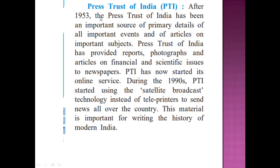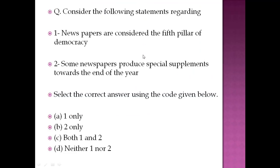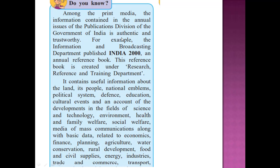The Press Trust of India (PTI) was established in 1953. Until 1990, news was provided in offline/print mode, but from 1990 onwards, satellite broadcasting began, which allowed news to reach everywhere. Whenever you see an important national news item in a newspaper, you will see 'PTI' listed as the source — meaning the news was obtained through the Press Trust of India.